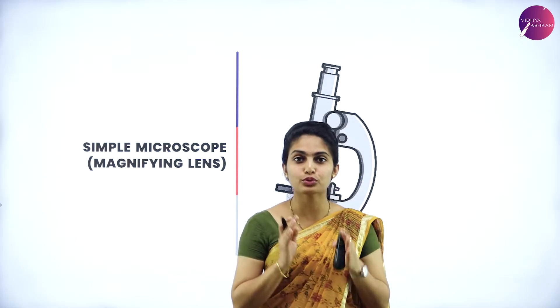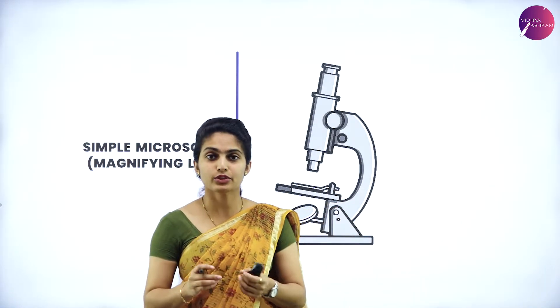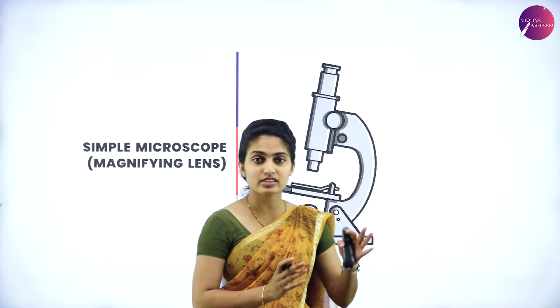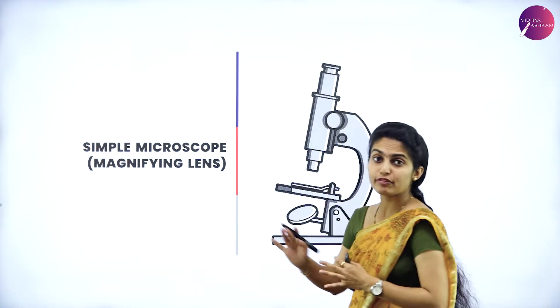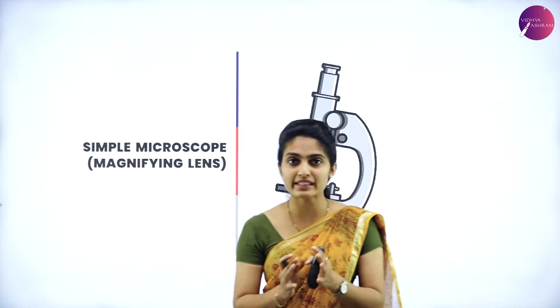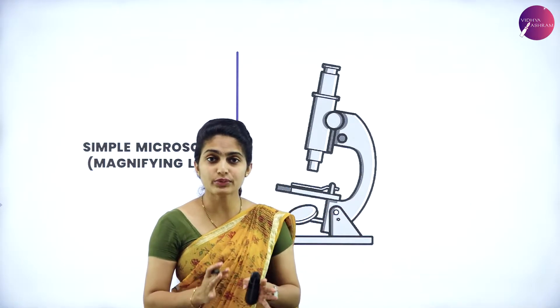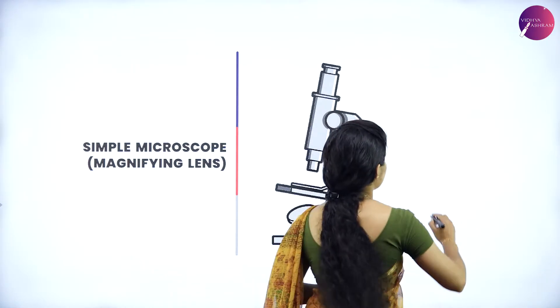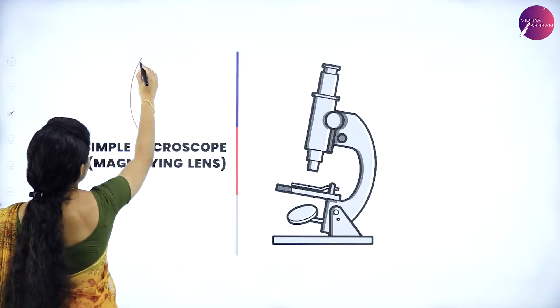A simple microscope is an instrument used to observe large images of smaller objects. It is used only to identify tiny particles — the object is kept below the lens and through the lens we get a magnified and clear image. That is why it is called a magnifying lens. In microscopes and telescopes, we always use a convex lens.